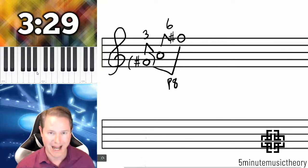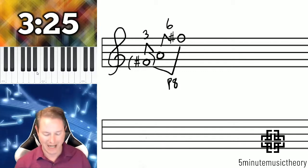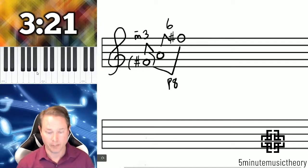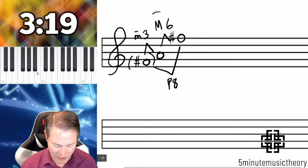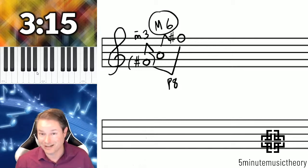From an F sharp up to an A, if we counted half steps, F sharp to A is three half steps which is a minor third. The complement of a minor third is a major sixth. From A to F sharp is a major sixth. It's really as easy as that.